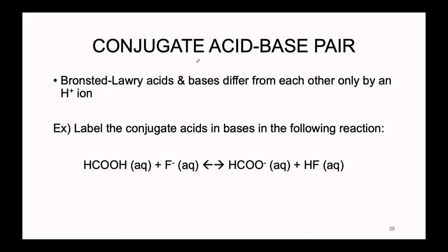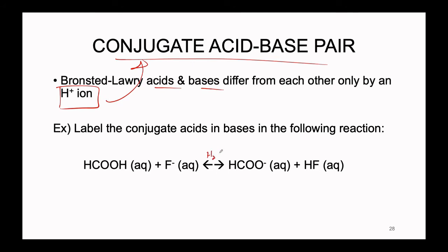Let's start by doing a little conjugate acid-base review. A Bronsted-Lowry acid and base that differs from each other by a single H+ ion — which is what we have already introduced — is a conjugate acid-base pair. In the following reaction, water is present since each species is labeled as aqueous. Each molecule is dissolved in water in a reversible reaction scenario, and we can label the conjugate acids and bases much the same way as before.